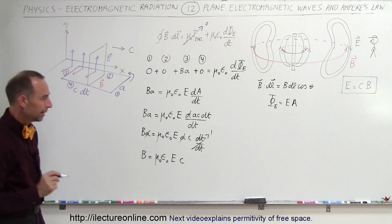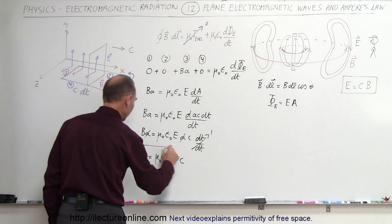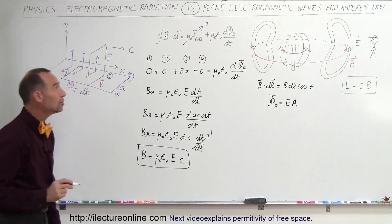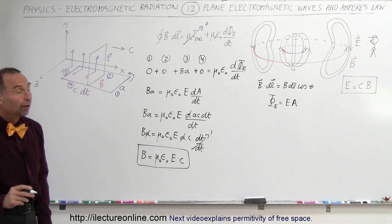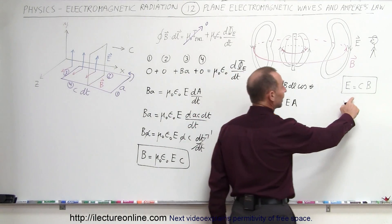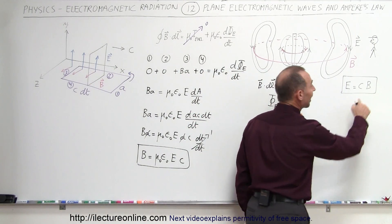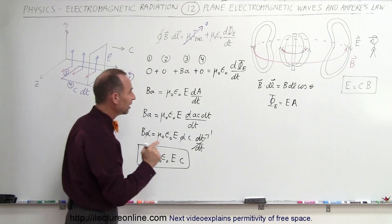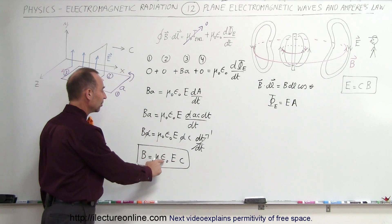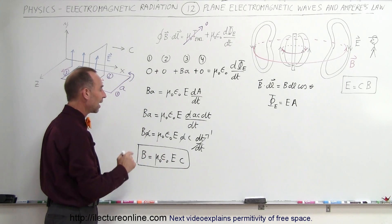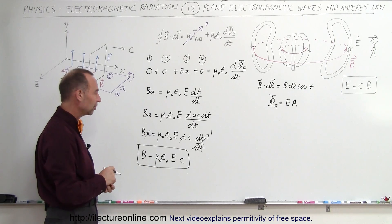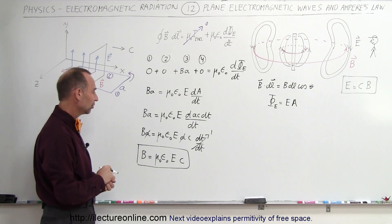Now let's compare this to what we got when we used Faraday's Law and did the same thing. From Faraday's Law we got E equals C times B. So if E equals C times B, and B equals μ₀ε₀ times E times C, we should be able to relate those two equations to each other.